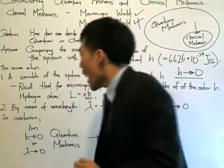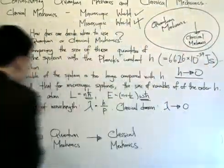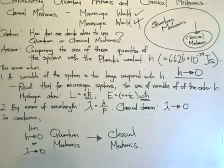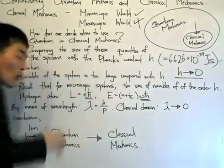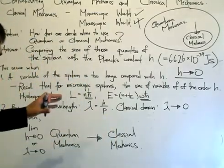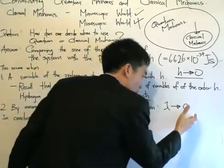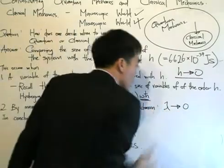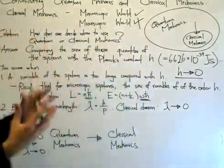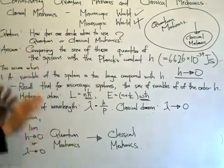Now the second case, which I believe is the one that we'll use more often and is maybe easier to understand, is by means of the wavelength. We know that de Broglie's hypothesis: λ equals h divided by momentum. So any sort of object has an associated wavelength, and the classical domain is defined when λ tends towards zero. Again similar when I say h tends towards zero.